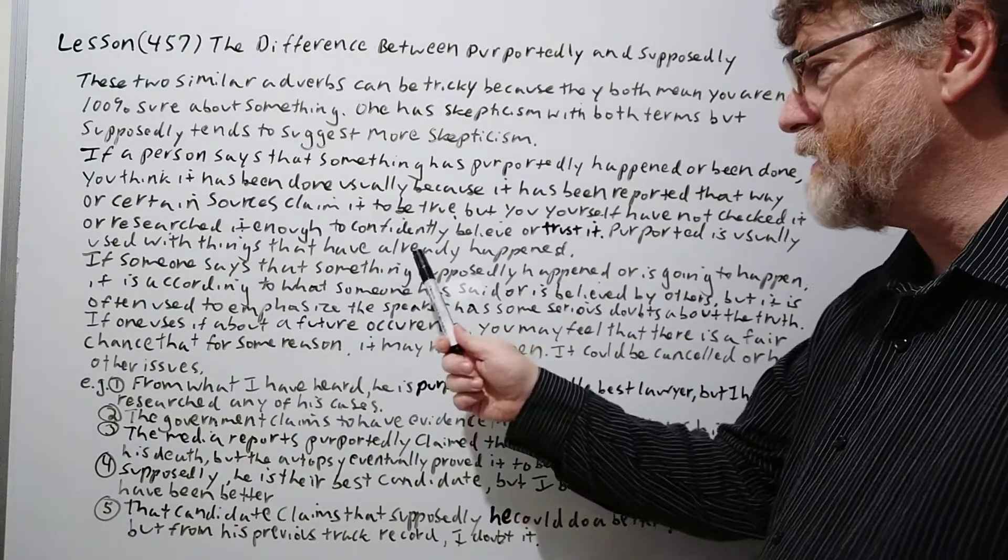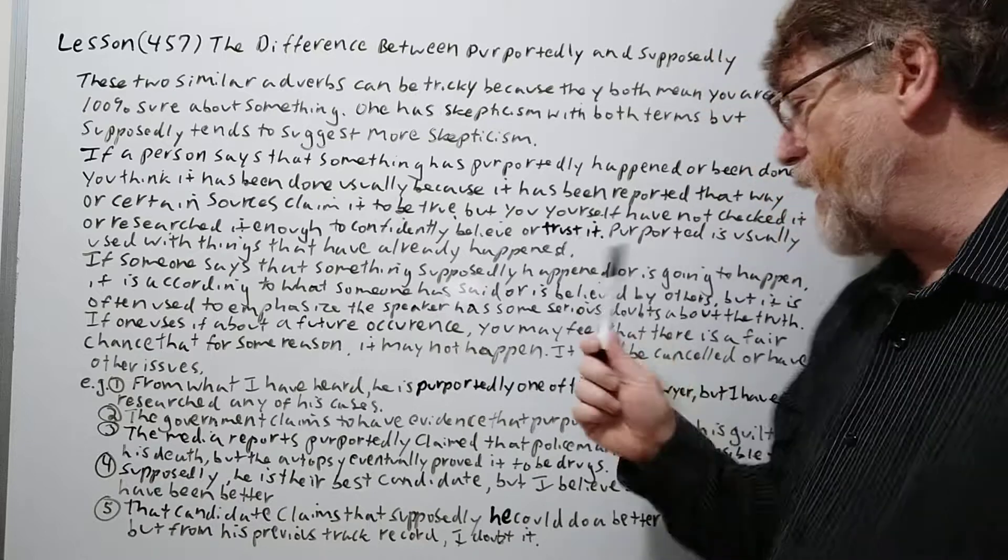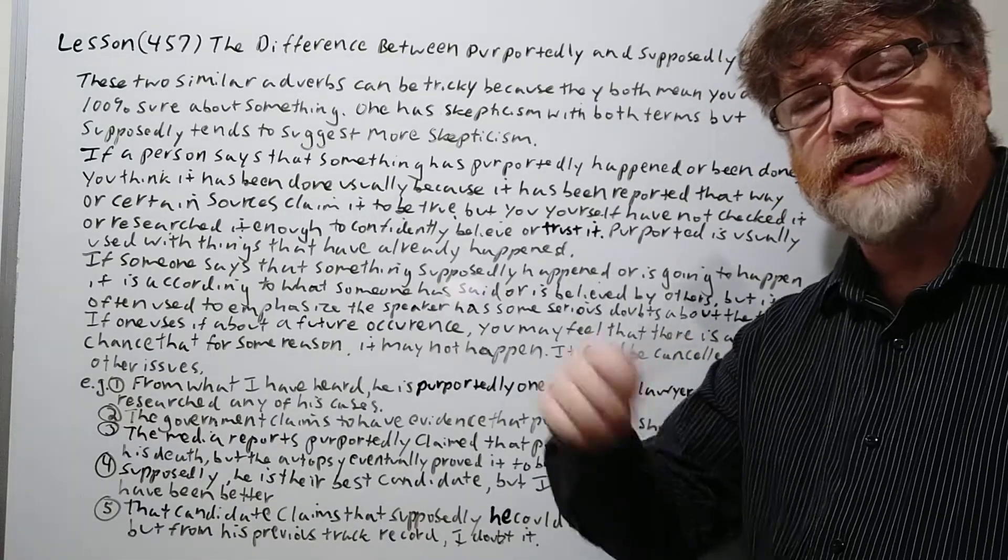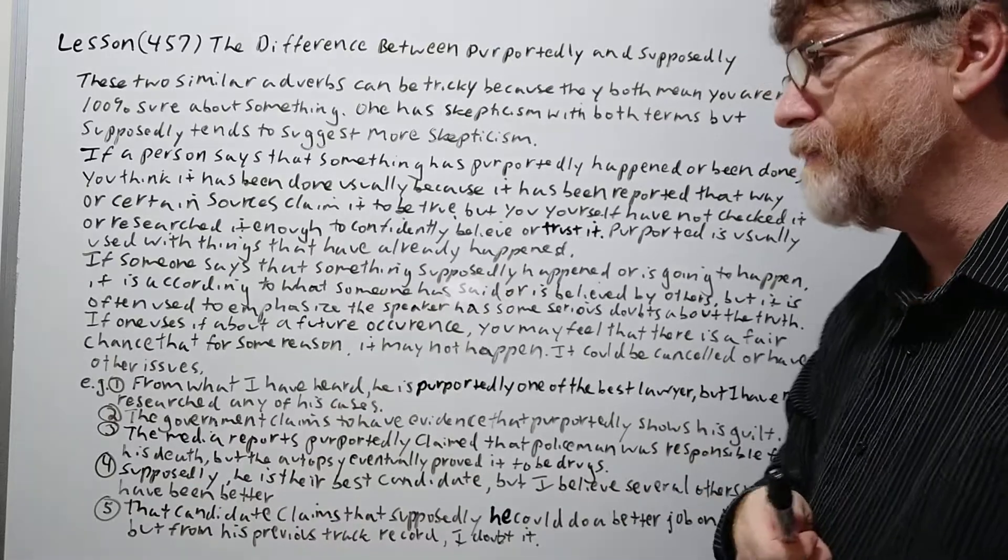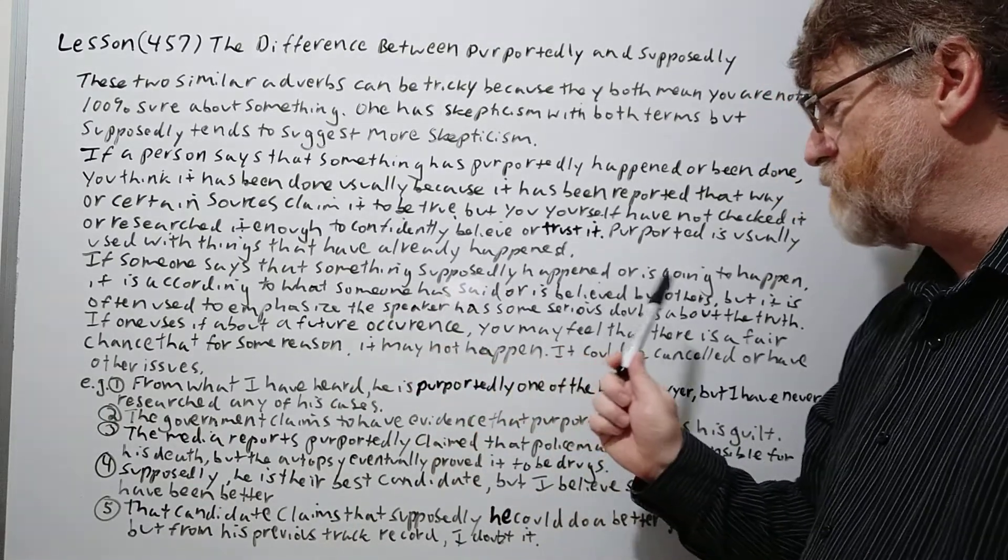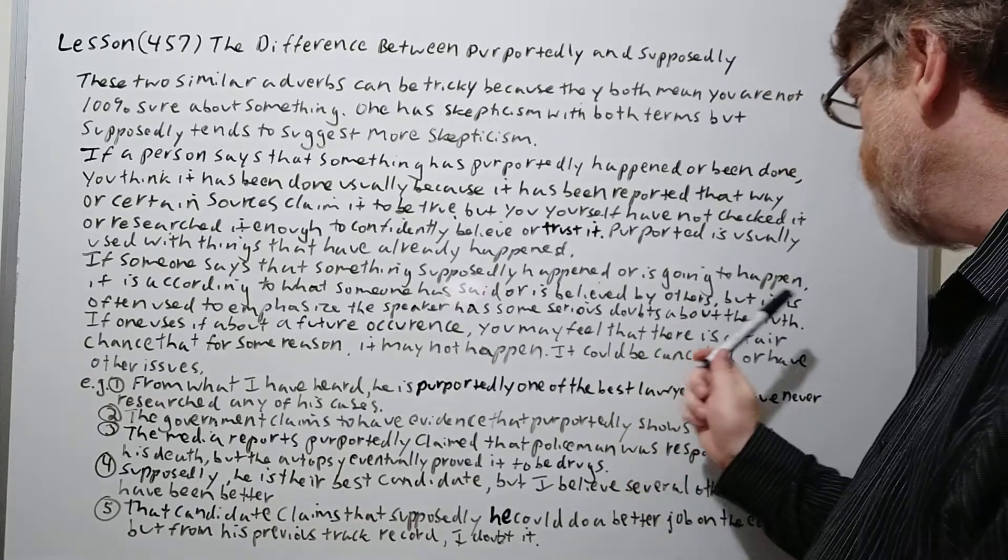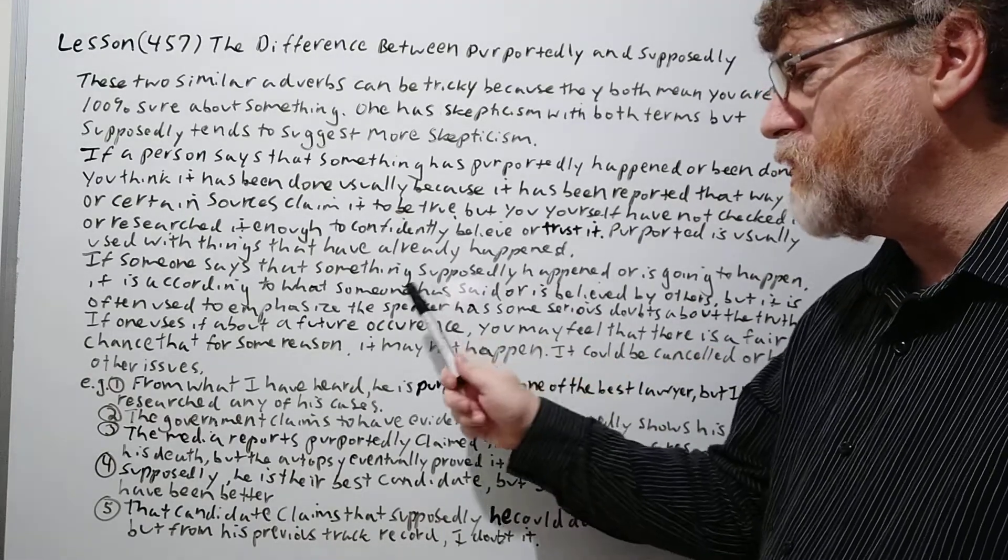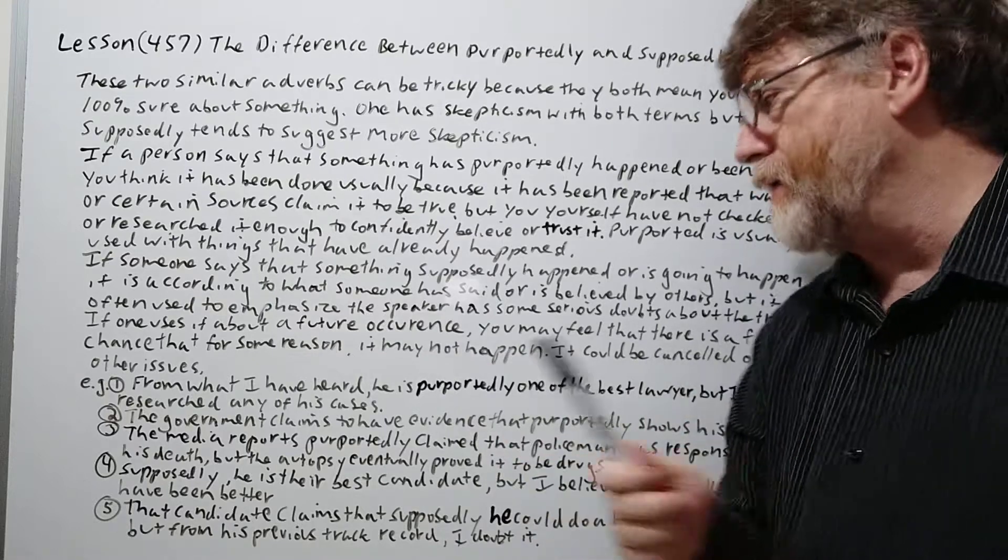If someone says that something supposedly happened or is going to happen - yes, so supposedly could be used with future things as well - it is according to what someone has said or is believed by others. But it is often used to emphasize the speaker or possibly the writer has some serious doubts about the truth.